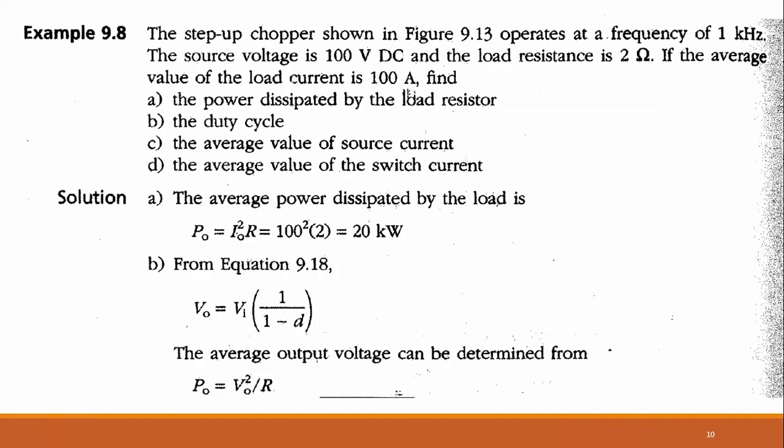The next examples cover boost converters. A step-up chopper operates at 1 kHz from a 100-volt DC source with a 2 ohm load resistance and average load current of 100 ampere. We need to find power dissipated by the load, duty cycle, average source current, and average switch current. Output power equals I² times R = 100² times 2 = 20 kilowatts.